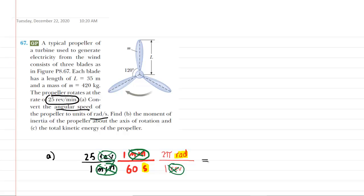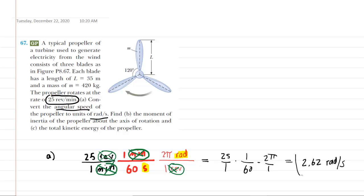Now pick up your calculator and multiply 25 over 1 by 1 over 60 by 2π over 1. When we do so, we're going to get about 2.62. And as highlighted in yellow, the units we have are radians per second. So that becomes the correct answer to part A of the question.